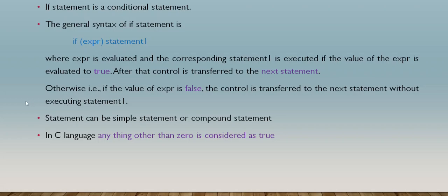One important point to remember is that in C language, anything other than 0 is considered as true. That means if you write 'if 1', that is taken as true. Anything other than 0 is considered as true.